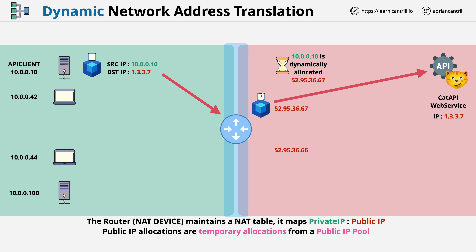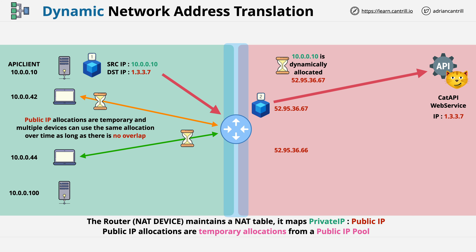The CAT API is able to send response traffic back using this public IP allocation. This process is the same as if we were using static NAT, but because dynamic NAT allocates addressing on a dynamic and temporary basis, multiple private devices can share a single public IP as long as there is no overlap.